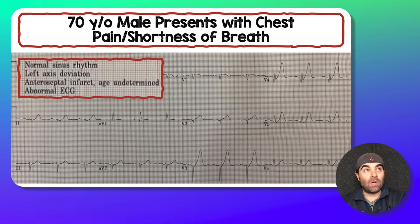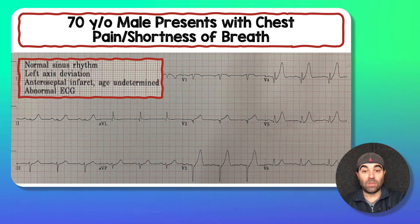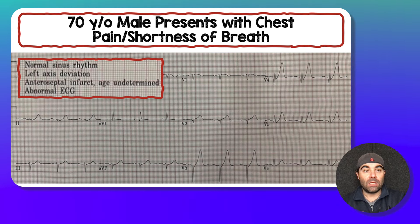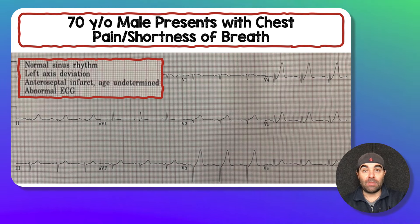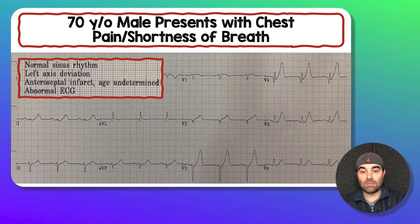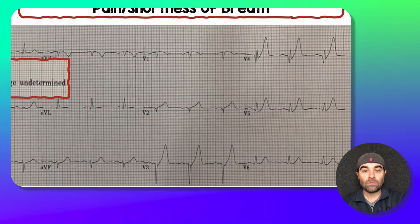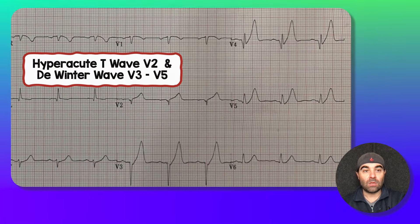To me, this is a patient who's having active chest pain and shortness of breath with this presenting EKG — this is a cath lab activation. This patient needs to go to the cath lab. But unfortunately, this EKG doesn't meet any millimeter criteria for ST elevation MI. So let's take a closer look at this.